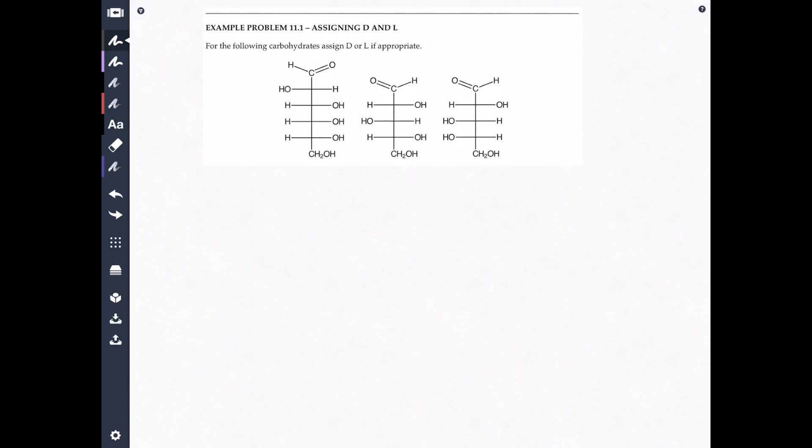What do we got? For the following carbohydrates, assign D or L, if appropriate. All right, this is not a really hard question. It's actually a very easy question. There's only a few things you have to know. First thing you have to know is that these drawings are called Fischer projections.